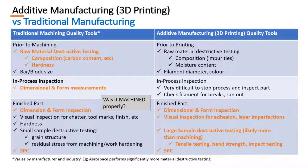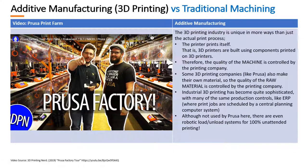So the question really becomes: for traditional machining, was it machined properly? Whereas the ultimate question for additive manufacturing is: did it bond properly? I've picked Prusa as an example here — one of the largest commercial 3D printer manufacturers, in business for many years. That's a very popular printer, and their technology forms the basis of much of today's modern fused deposition modeling printers.